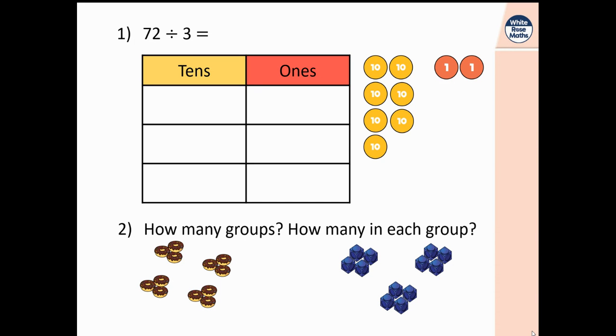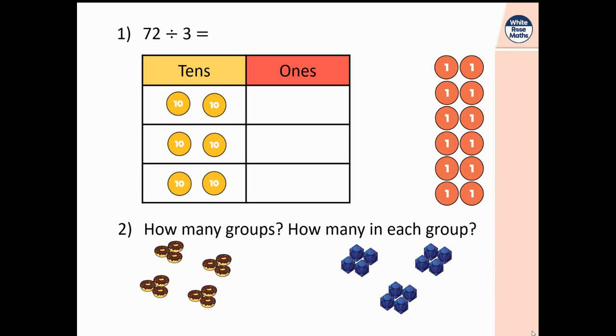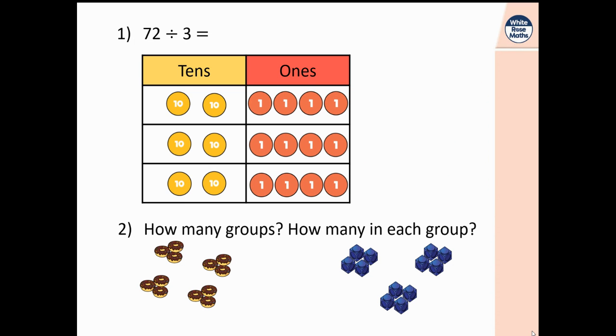How could you share that amount equally between the three rows? Do that now on your piece of paper. Okay, so you would have two tens in each row and what do I do with that last ten? I can't share it out equally as it is, so I then have to take it to the swap shop and exchange it for ten ones. I can then put those in the correct row so that gives me 24 in each row. So 72 divided by three is 24.